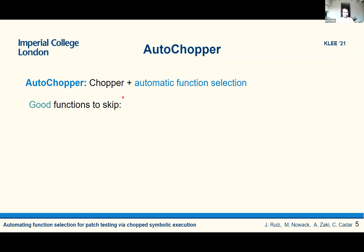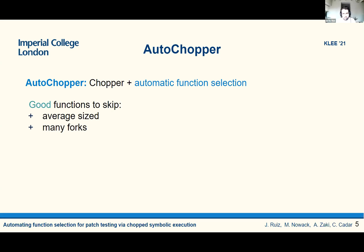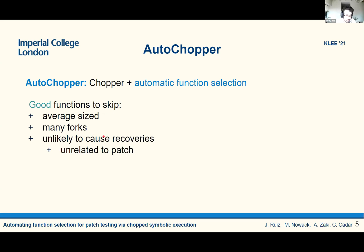So what are good functions to skip? First, it should be average size. If the function is tiny, it is not worth skipping. If the function is huge, on the contrary, it's very likely to have some dependencies and to trigger a recovery at some point, thereby not making it worthwhile to skip. Ideally, it should have many forks, because skipping a function that causes forks helps a lot with scalability — it is the root of the path explosion problem. Finally, it should be unlikely to cause recoveries: it should be unrelated to the patch, because if it is related, we will have to execute it at some point. And it should have few side effects.